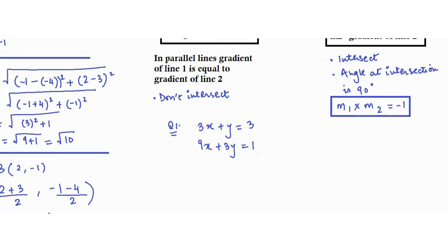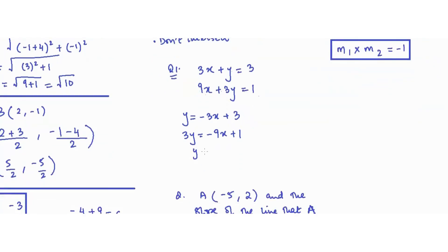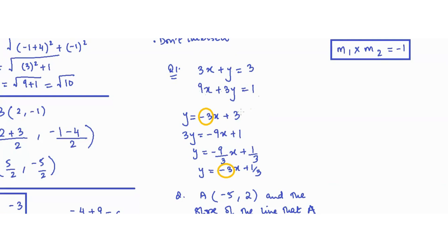Rearranging the first equation into slope-intercept form gives y equals negative 3x plus 3. Rearranging the second: 3y equals negative 9x plus 1, so y equals negative 3x plus one-third. Both gradients are negative 3, so since the gradients are equal, line 1 and line 2 are parallel.